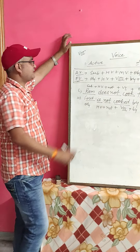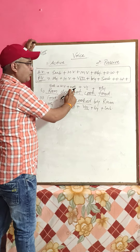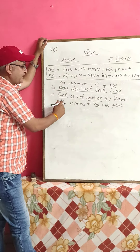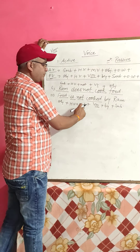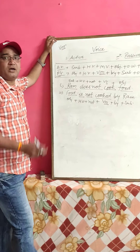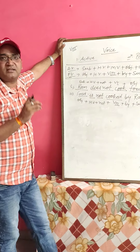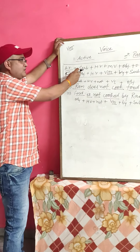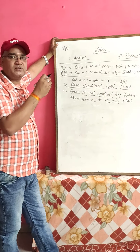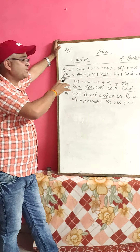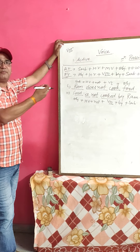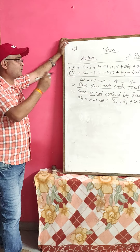According to the active voice sentence structure: subject + helping verb + not + first form of verb + object. In passive voice structure: object + helping verb + not + third form of verb + by + subject. We have to change the sentence according to this structure and the suitable format.